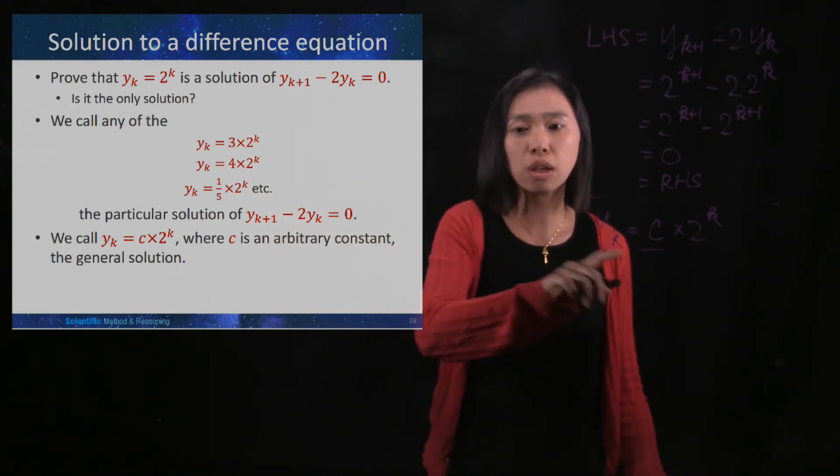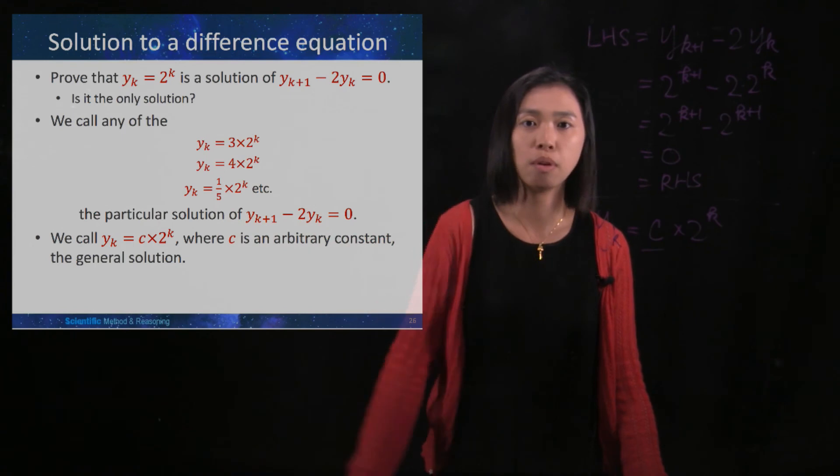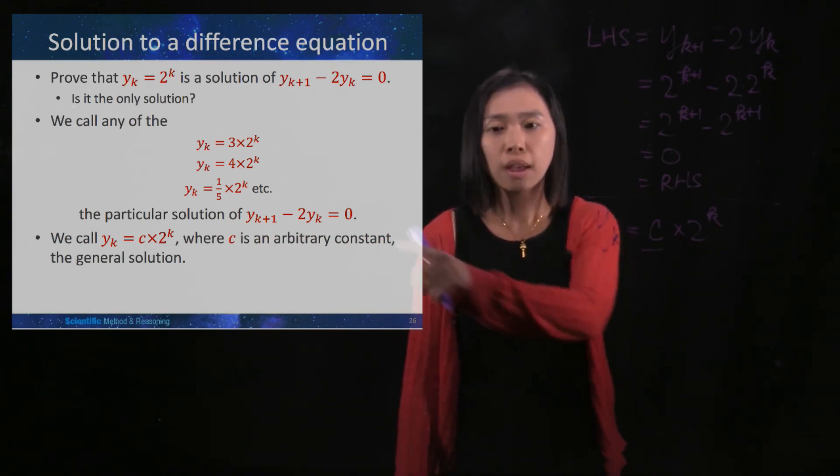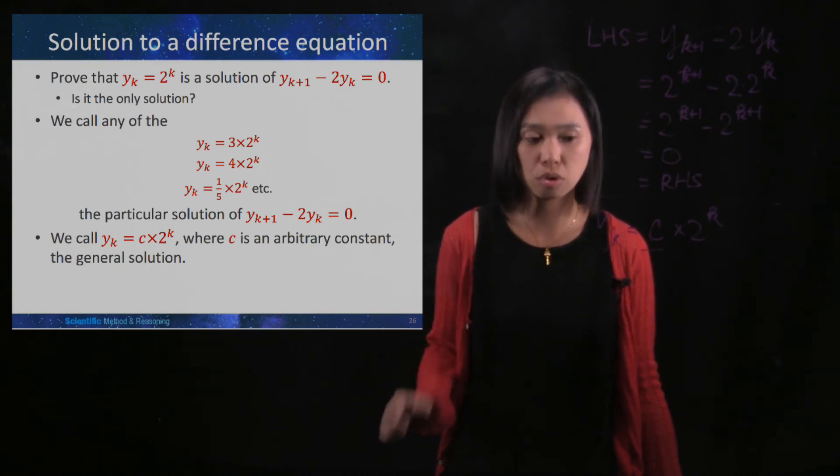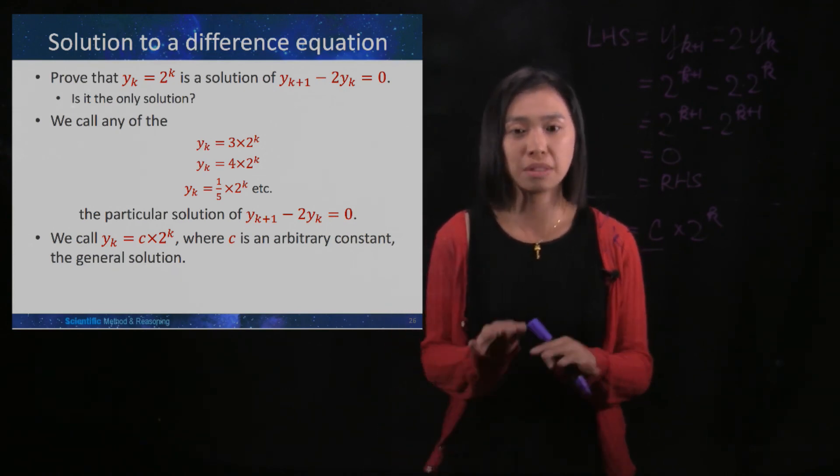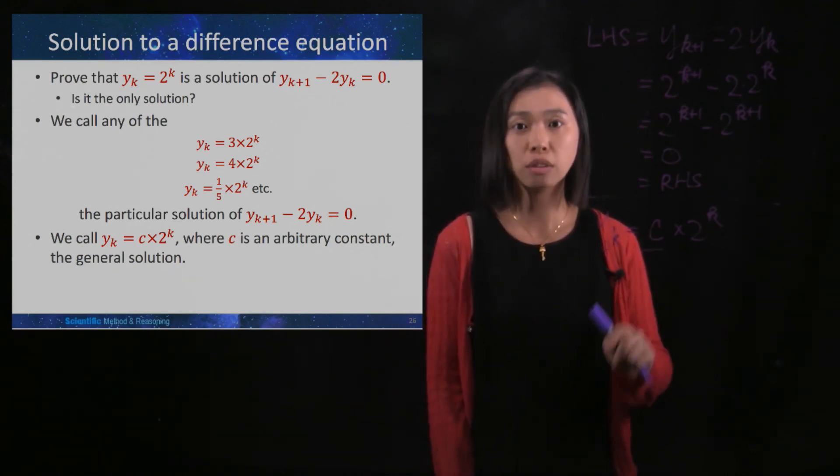And then you can substitute it by 3, it can be by 4, it can be 1 fifth, it can be anything. So if you have a specific number, then we call it a particular solution. If you have a c which represents everything, then you call it a general solution.